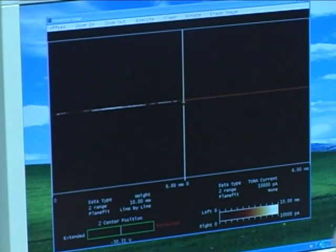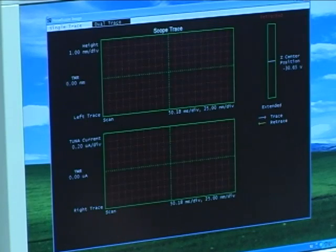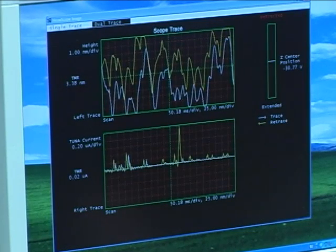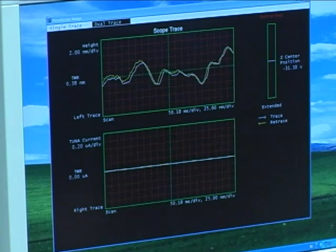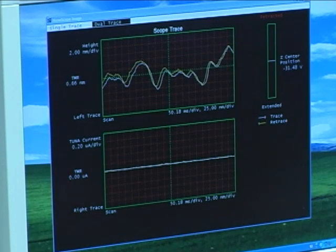So we'll just scan 500 nanometers squared. And about half a hertz. Go ahead and adjust my gains. I'm just adjusting my gains to try and get what I consider the best overlap between the trace and the retrace of the tip without introducing too much noise.